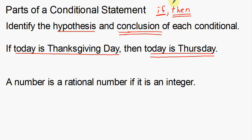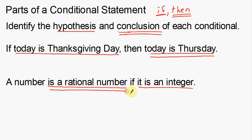A conditional statement is an if-then statement, but reading this sentence I don't see any 'then.' So we use the absence of 'then' to figure out what the conclusion is. I do see an 'if,' so the hypothesis is 'it is an integer.' The conclusion — the part stating what is true — is 'a number is a rational number.' In other words: if a number is an integer, then that number is a rational number.